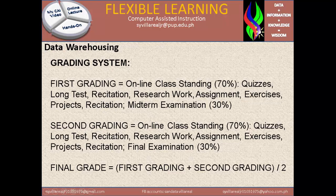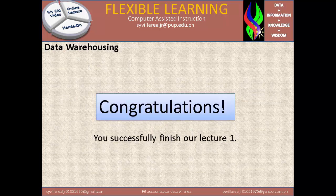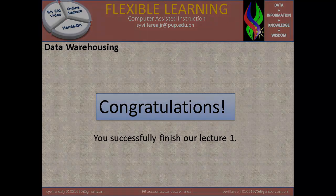The same applies to the second grading period. Online class standing is 70%, covering quizzes, long tests, research, assignments, exercises, and project, with the final examination at 30%. Again, recitation must be removed and replaced with case studies. The final grade equals the first grading plus the second grading, divided by 2. Congratulations, you have successfully finished Lecture 1. Thank you and good luck.